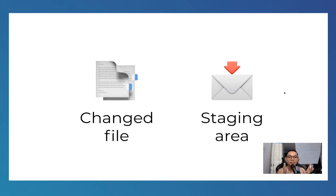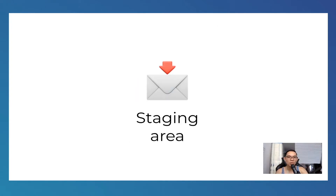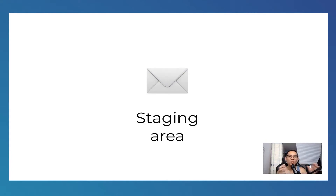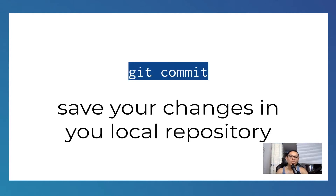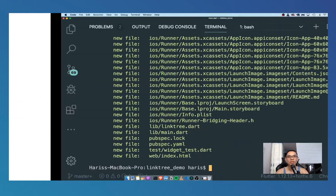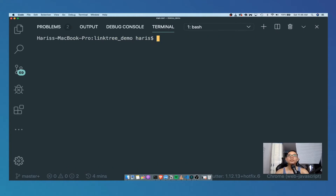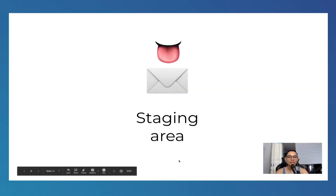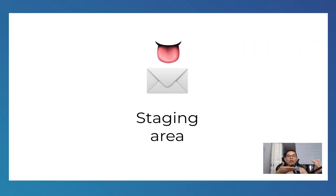Sometimes certain files aren't ready to be saved yet, so you only add the files that are ready into the staging area and save them later. The staging area is a very flexible area for you to add or not add files. Important to note: when you put files inside the staging area, they are not actually saved yet. Once we're done adding files, we want to seal and save them as a version using git commit.